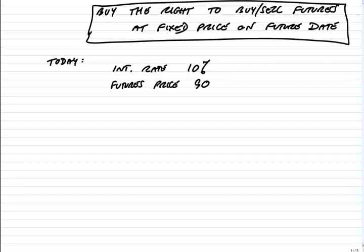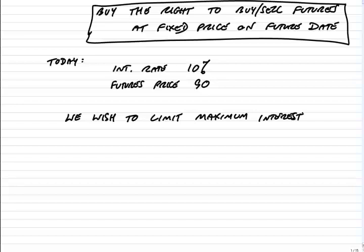It will involve taking a loan on a future date. Perhaps we think the interest rate is going to fall and we want to get the benefit, but just in case things went wrong, we wish to limit the maximum possible interest to, let's say, 12%. I think rates will go down — no problem. If they go up, I'll accept paying up to 12%, but I want to make sure I never pay more than 12%. The equivalent futures price to 12% would be 100 minus 12, so the equivalent futures price would be 88.